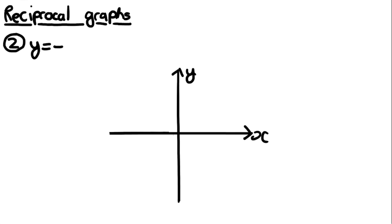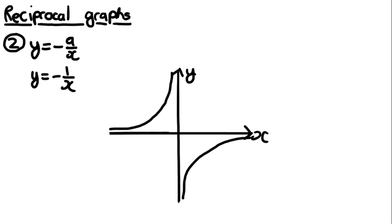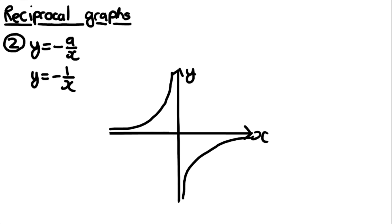The second type of graph is in the form y = -a/x. For example, y = -1/x has the exact same shape as before, but the lines are on opposite sides of the axes. This can be explained by graph transformations — it's mirrored in the x-axis, although technically you could say it's mirrored in the y-axis in this case. When there's a minus, the curves are simply on the opposite axes.